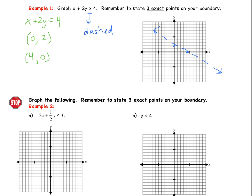Now I know I said to state three exact points, but when we're in standard form, simply graphing the intercepts is okay. Now remember, the last thing I said we have to do is shade. So what we need to do is test a point that is not on our boundary line and see if it holds true.